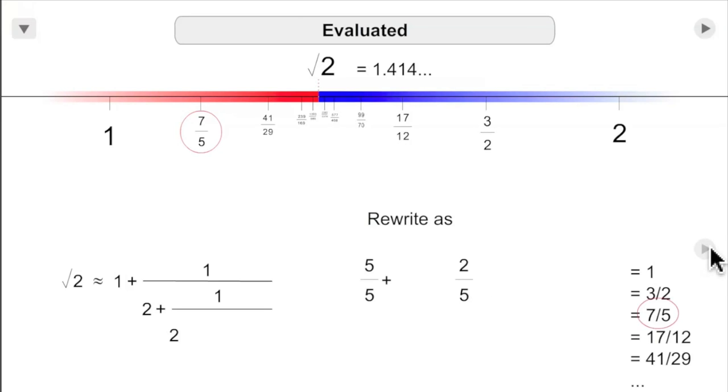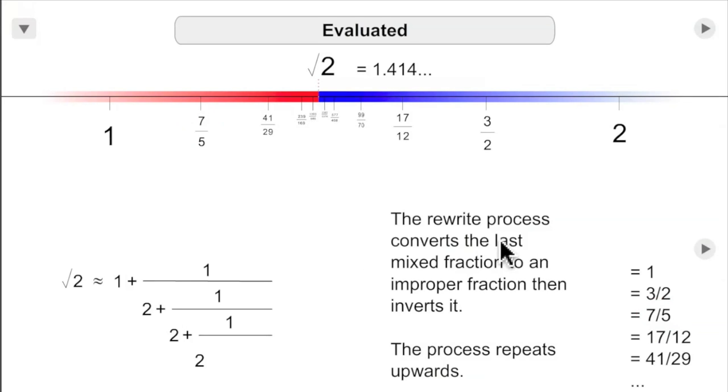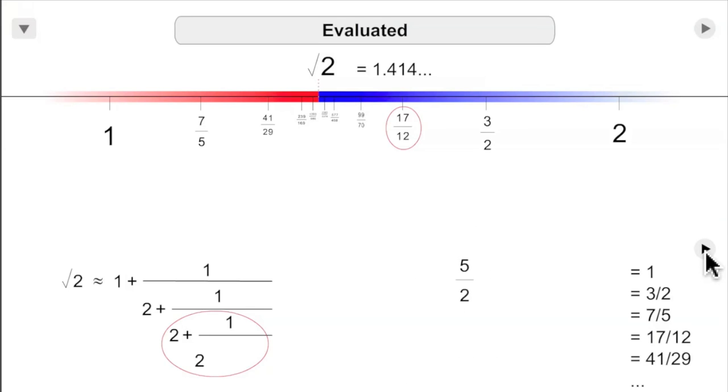2 fifths, 5 fifths plus 2 fifths is 7 fifths. Converts the last mixed fraction to an improper fraction then inverts it. We've done this before. And here, this is where I'm going to stop.